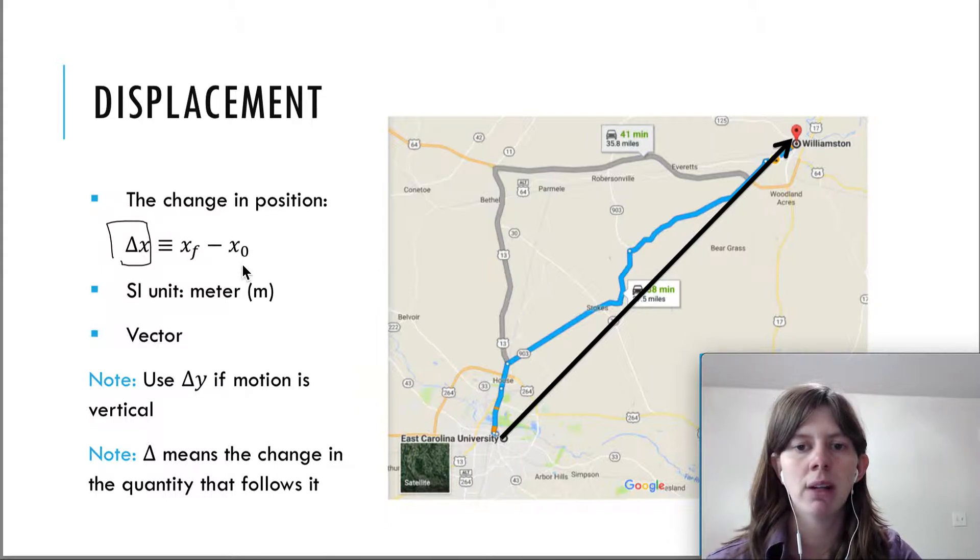it means that it's the final of that quantity minus the initial of that quantity. And in this class, I do tend to use a zero for initial. The previous picture simply had an i. So x0 or x initial - same thing. It just stands for that initial position.